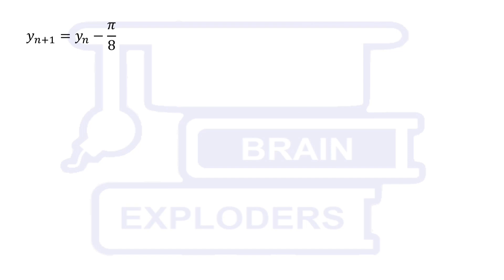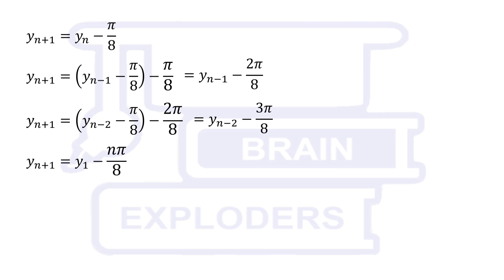Using this iterative formula, we can replace yn by yn minus 1 minus pi by 8. So, yn plus 1 is equal to yn minus 2 pi by 8. Similarly, yn plus 1 is equal to yn minus 3 pi by 8.